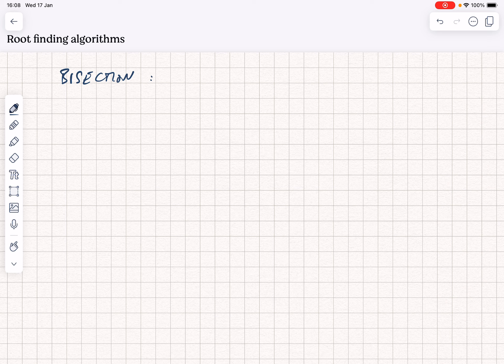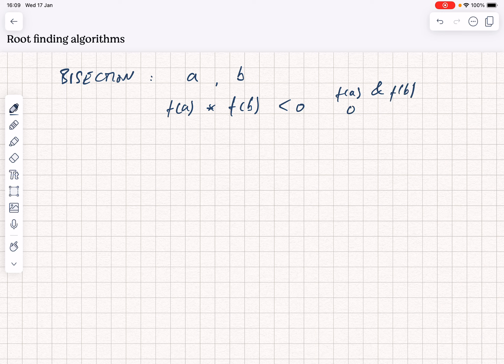You start with two bracketing points, A and B, such that the function at point A multiplied by the function at point B is less than zero. What that means is that f(A) and f(B) have opposite signs.